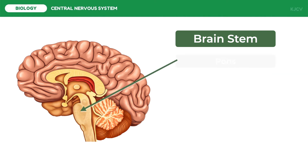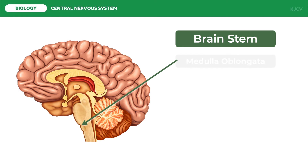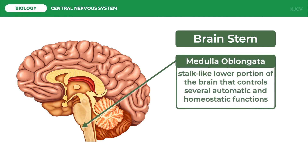The pons is responsible for breathing and eye movement. It also participates in regulating the breathing centers in the medulla. The medulla oblongata is a stalk-like lower portion of the brain that controls several automatic and homeostatic functions, including breathing, heart and blood vessel activity, swallowing, vomiting, and digestion.